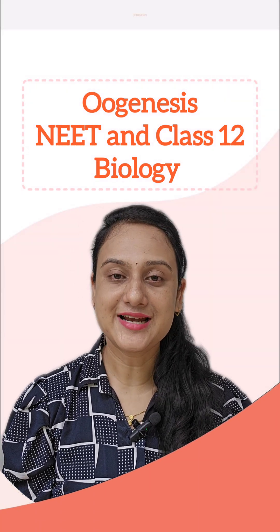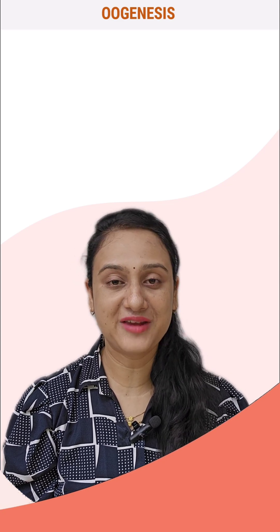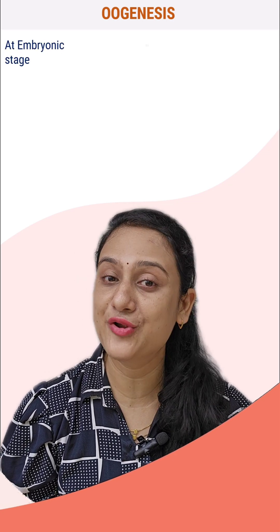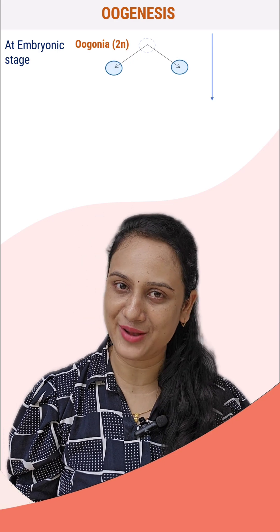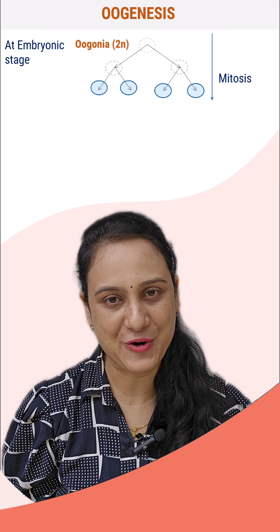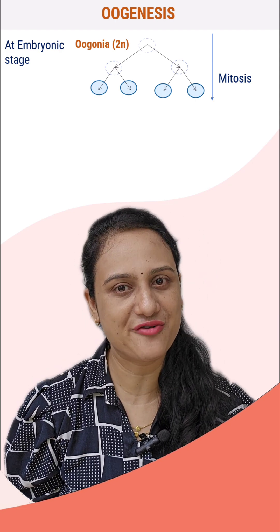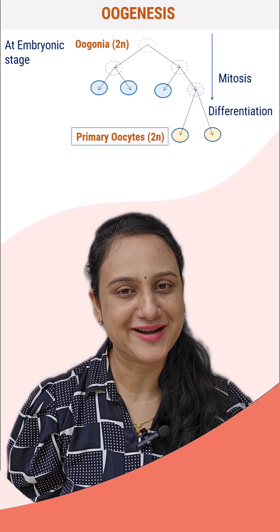Oogenesis is the formation of the female mature gamete, that is the ovum. It is markedly different compared to spermatogenesis because it begins at embryonic life itself. Lots of oogonia multiply mitotically and increase their number during embryonic life. After this, no more oogonia are added or formed. These oogonia are diploid in nature and have 46 chromosomes. They undergo differentiation to form the primary oocyte, which is again diploid in nature.